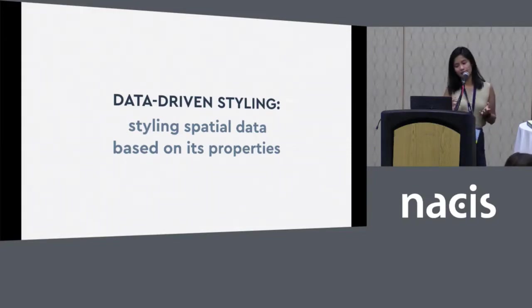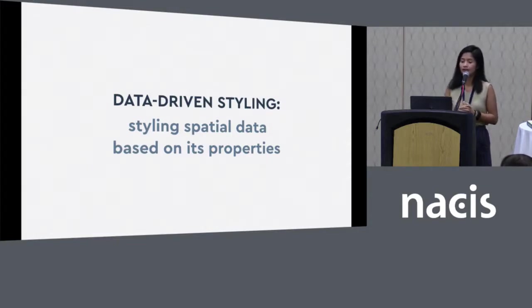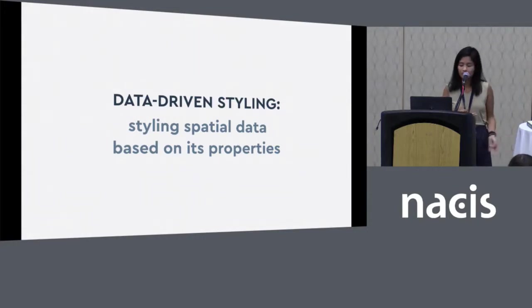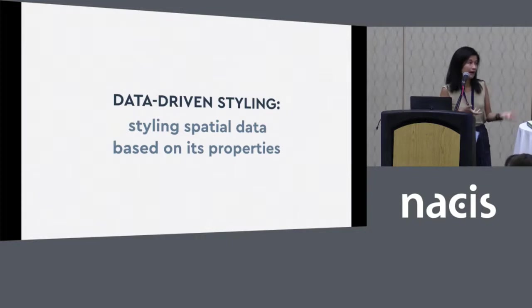Some examples of this: you might want to change the color of a state polygon based on the population of that state. You might want to display every country's label in that country's own primary language. Or you might determine the width of a road based on that road's classification.